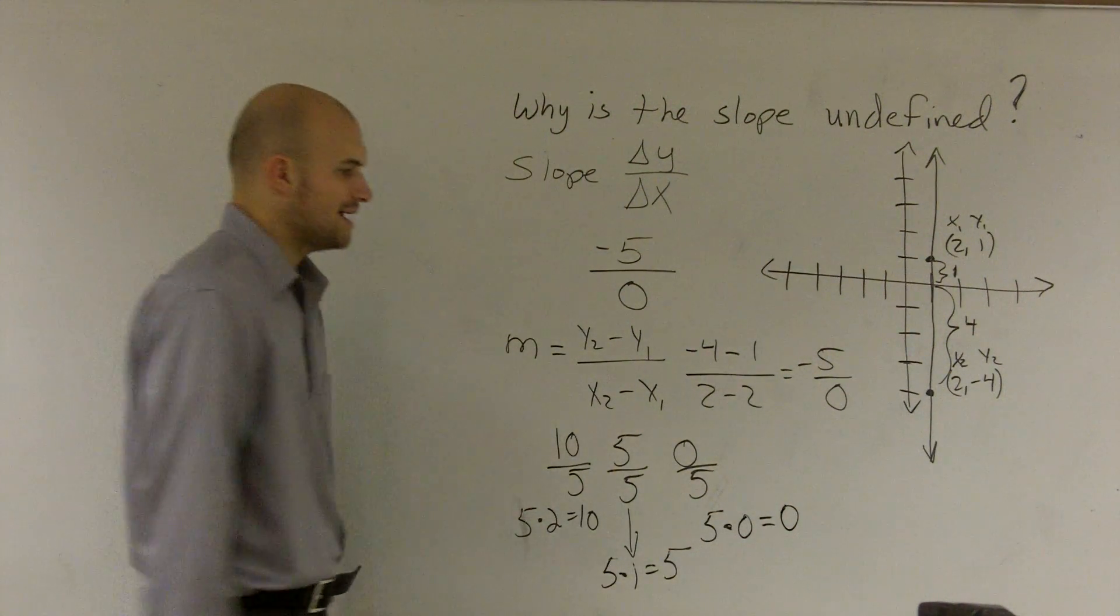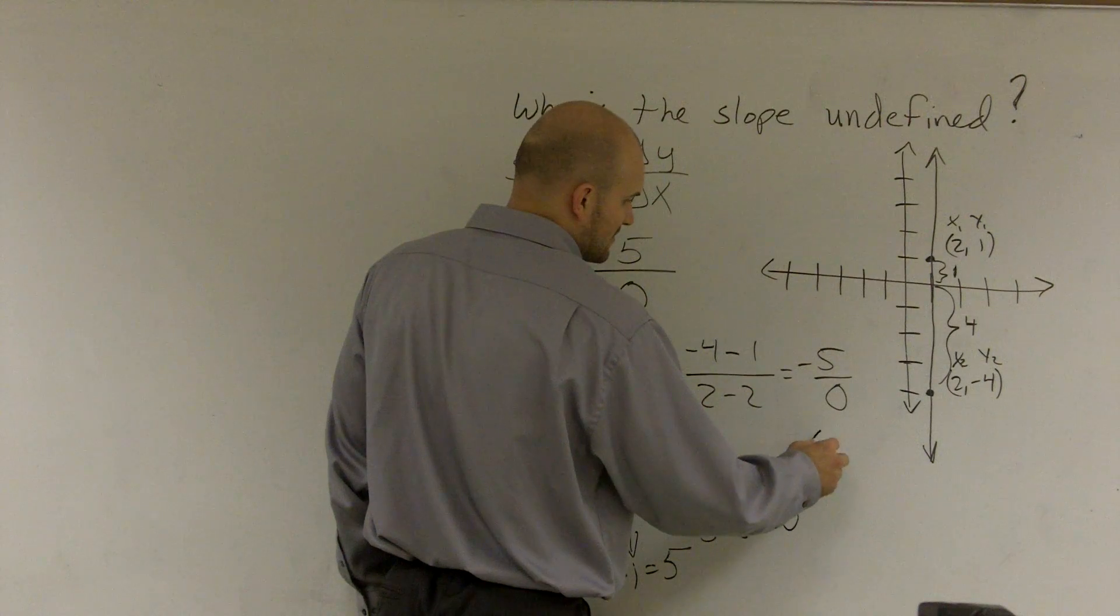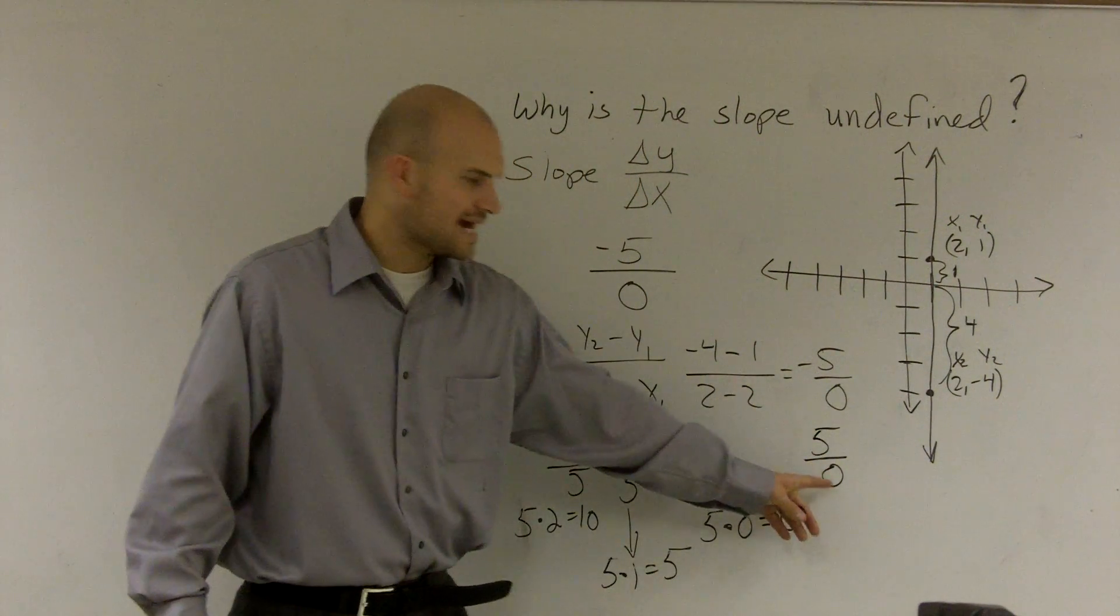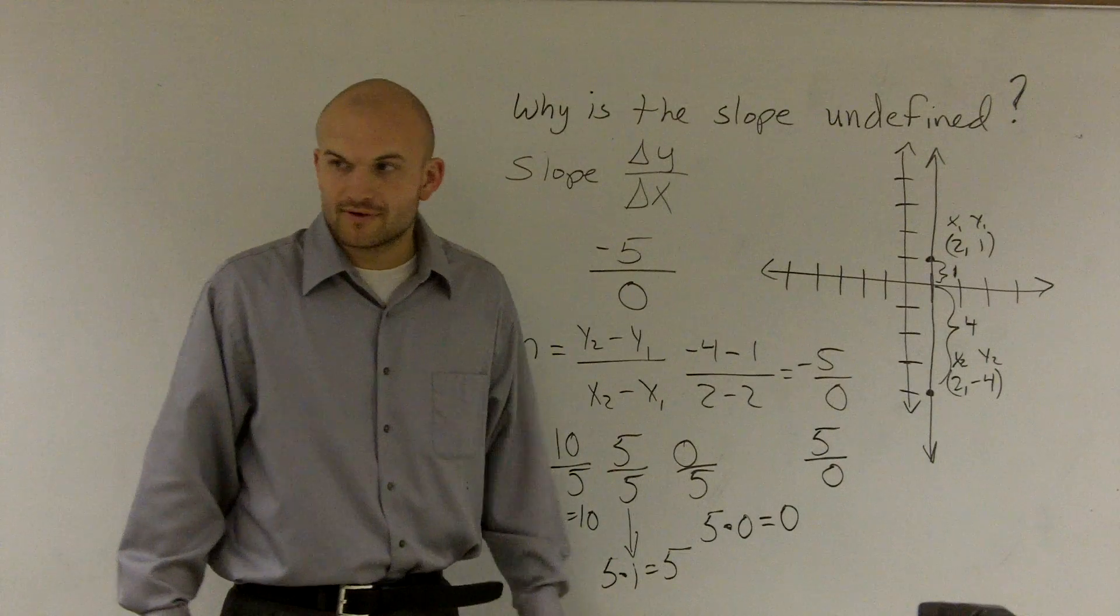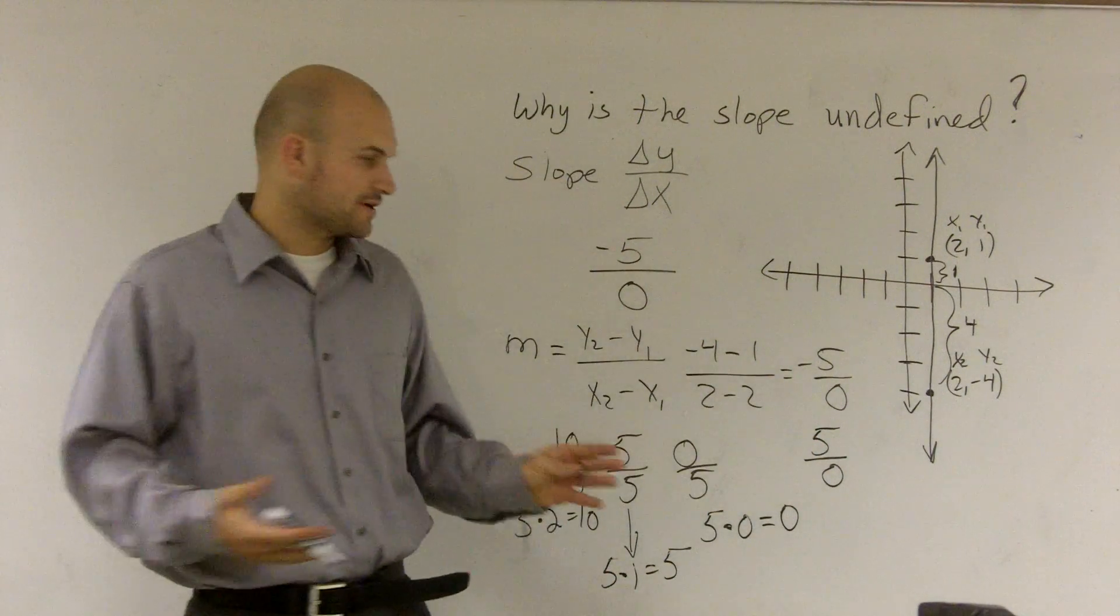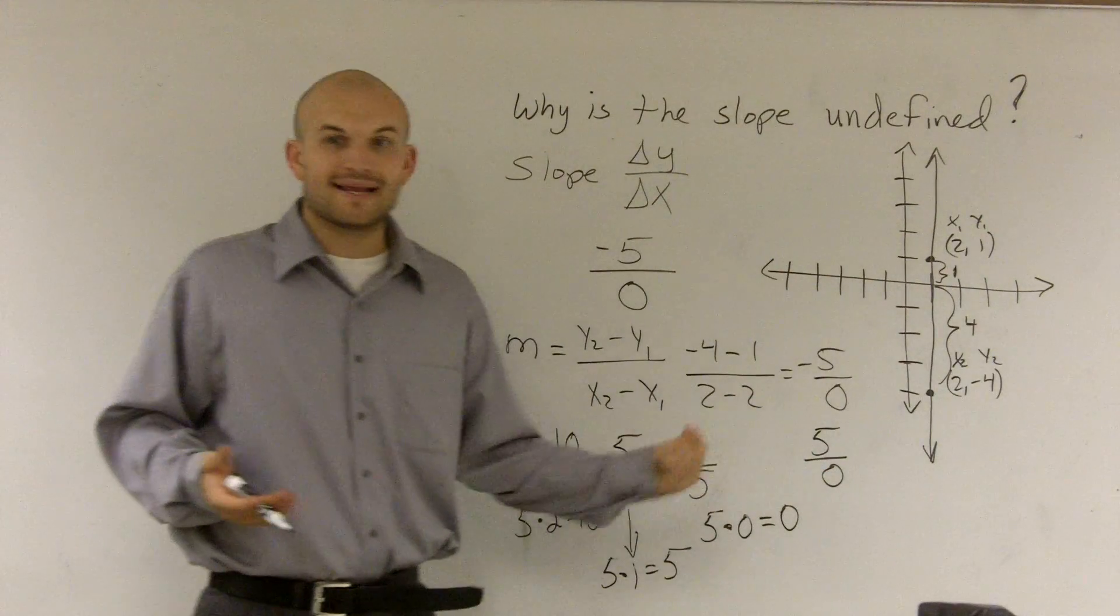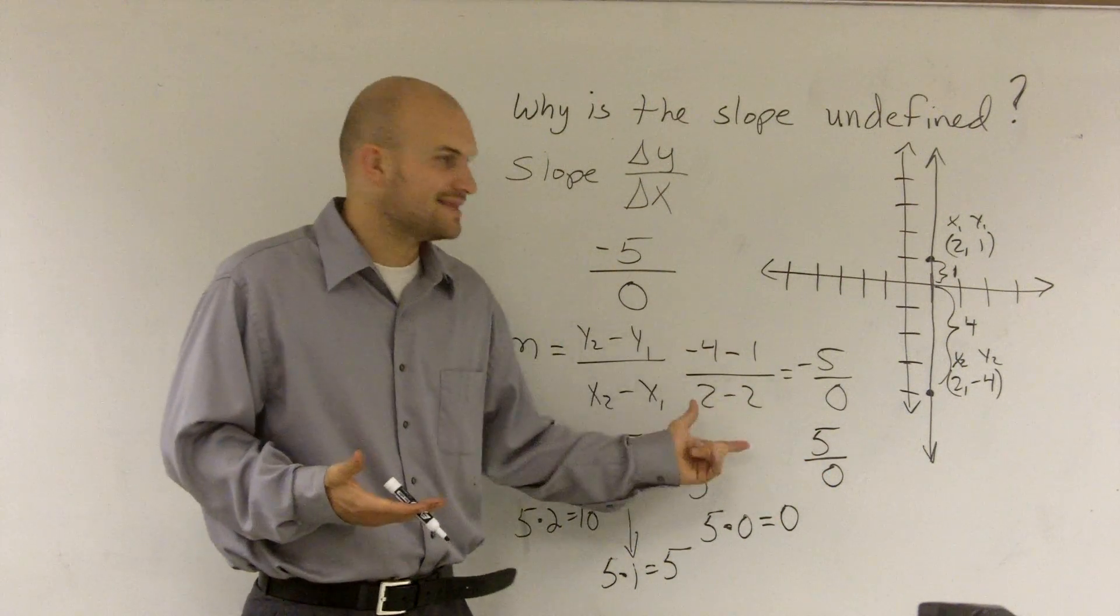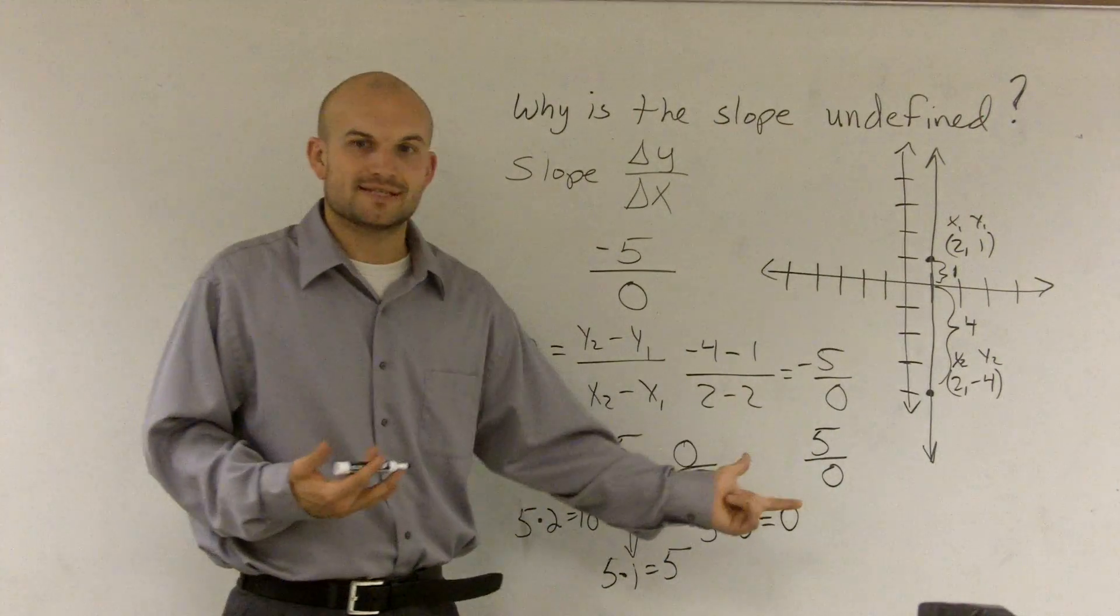However, how can we ever write, and it doesn't matter what's on the top, but 0 times what is going to give you 5? Well, we know that 0 times anything is 0. So if you're going to multiply by 0 and try to get some number, that's undefined, all right? You can't multiply by 0 by anything to get a number other than 0.